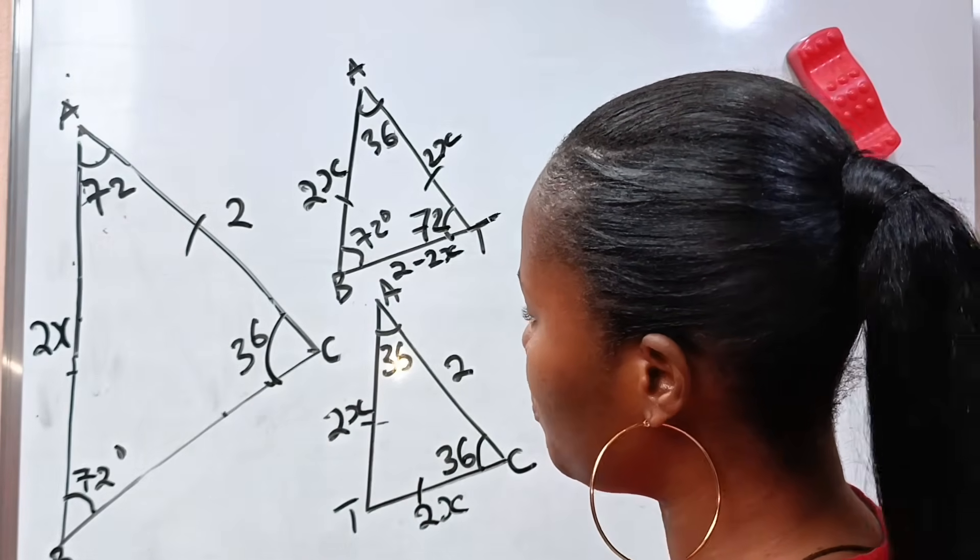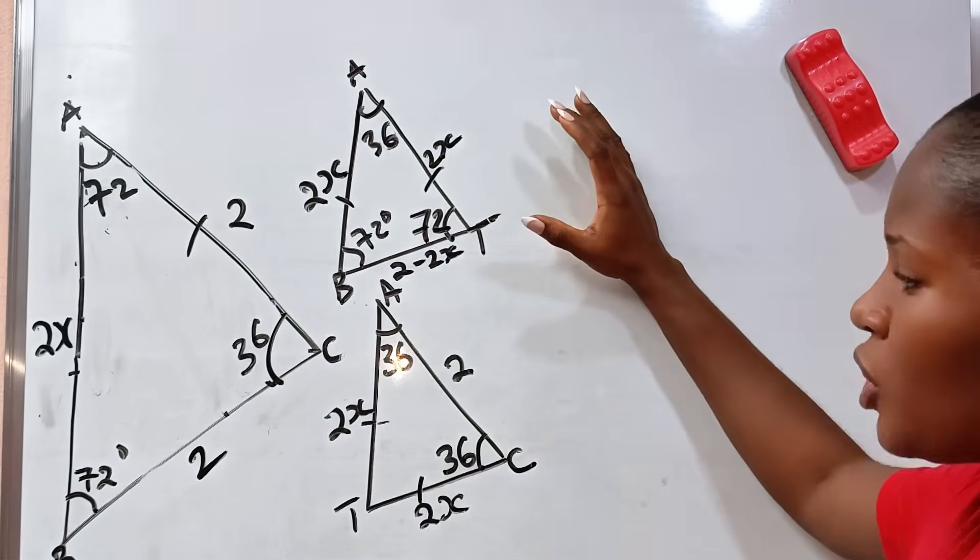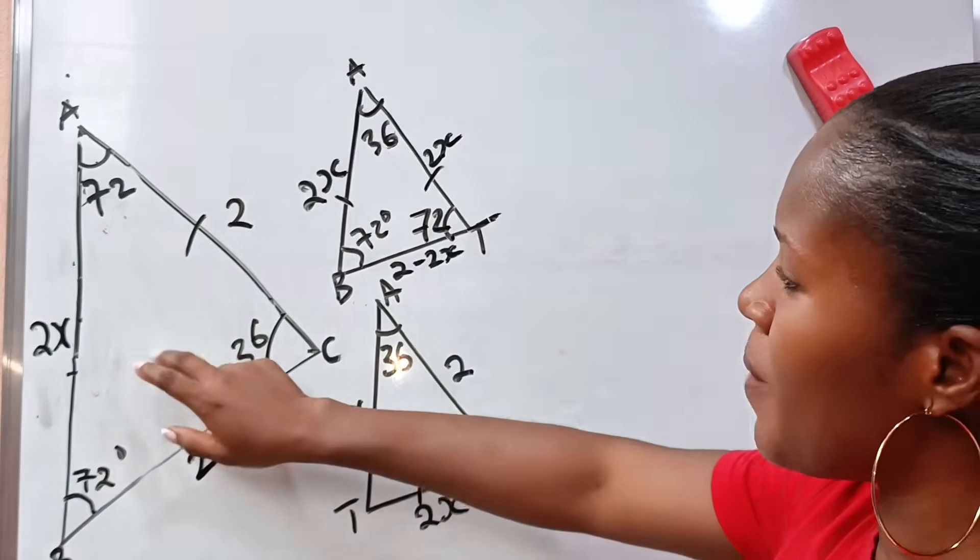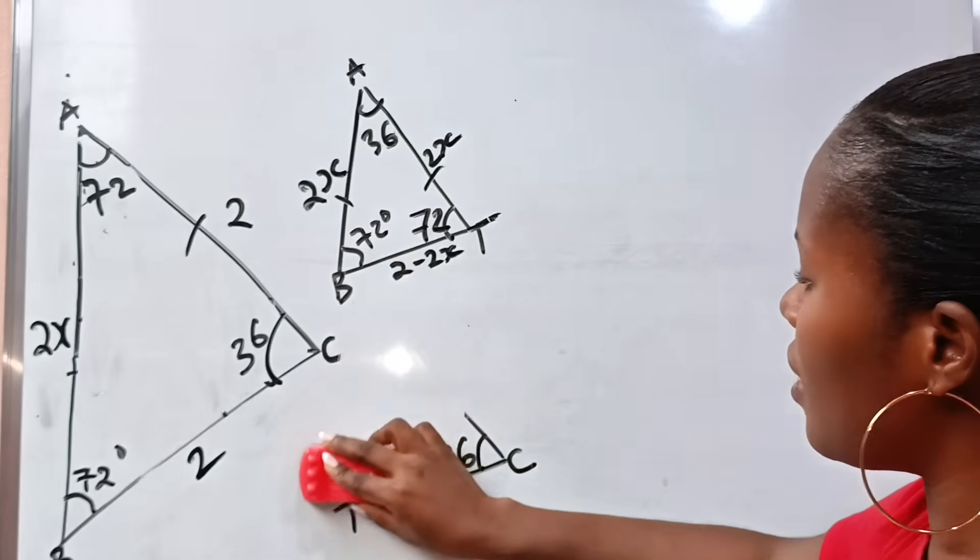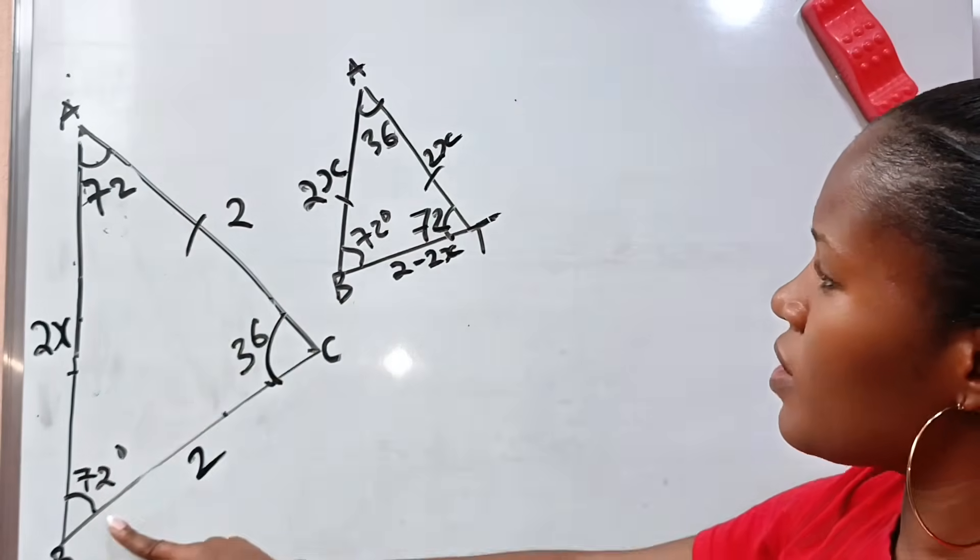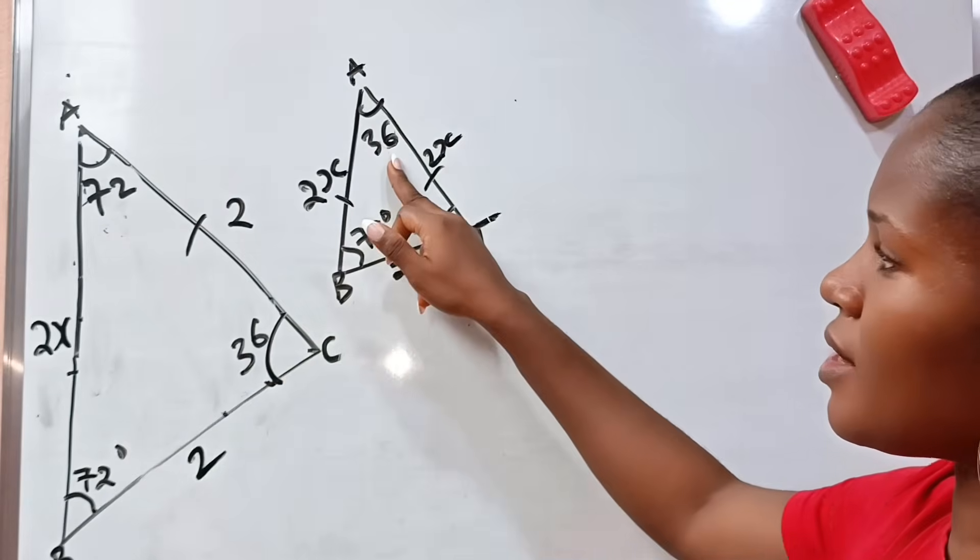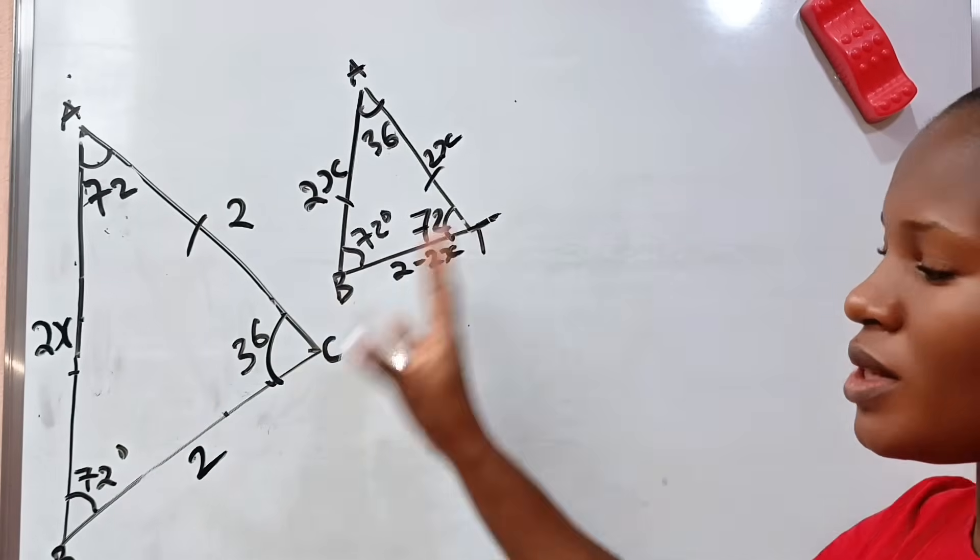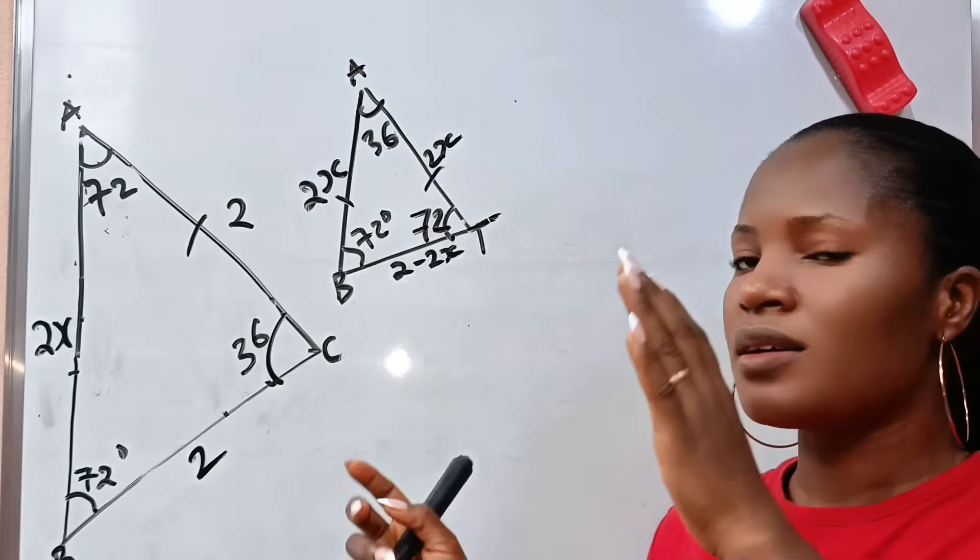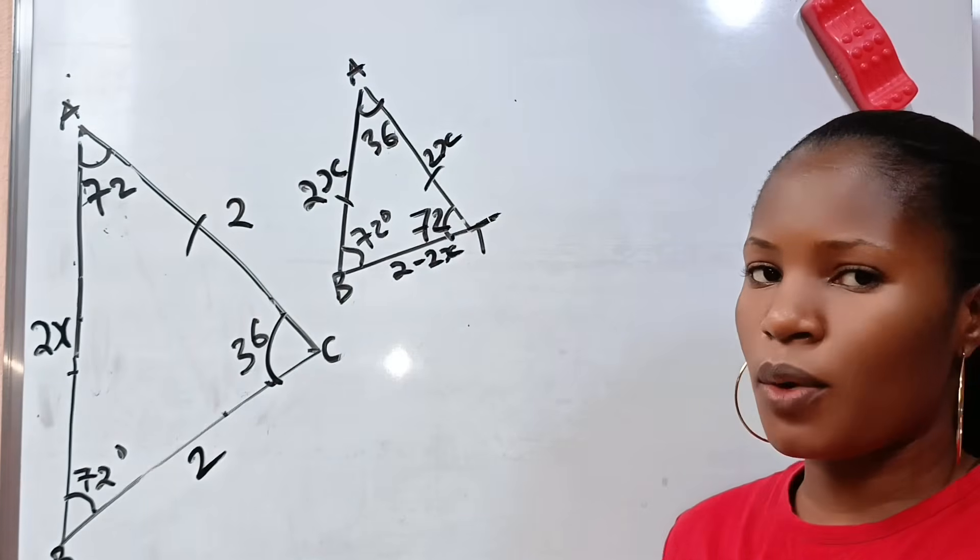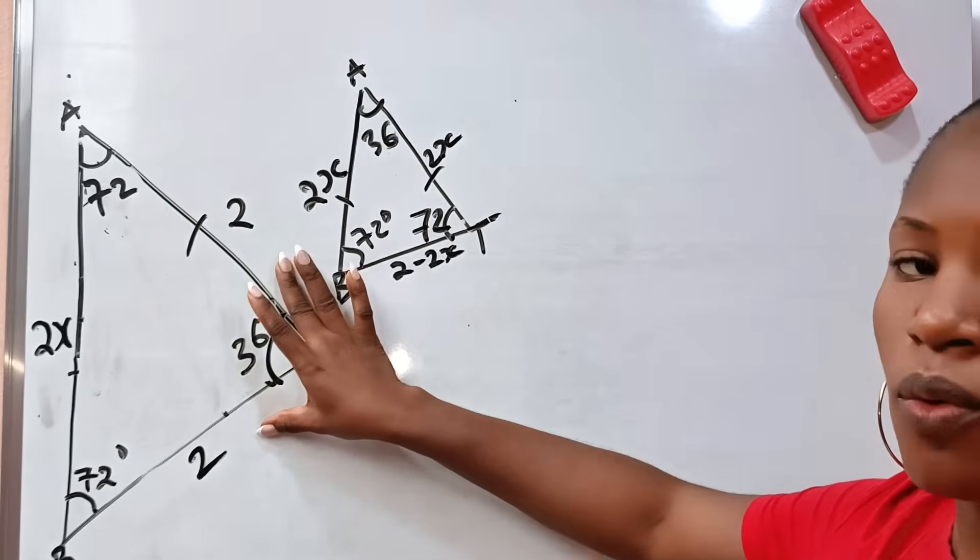So what am I trying to do? I'm now going to compare this particular triangle and the first triangle. Because the two triangles are similar. Let us check. You can see 72, 72. You can see 72, 72. You can see the 36 and this is 36. You can see 2X. You can see 2X. So these two triangles are similar triangles. And what's about similar triangles is that the ratio of their corresponding sides are equal. The ratio of the corresponding sides are equal.